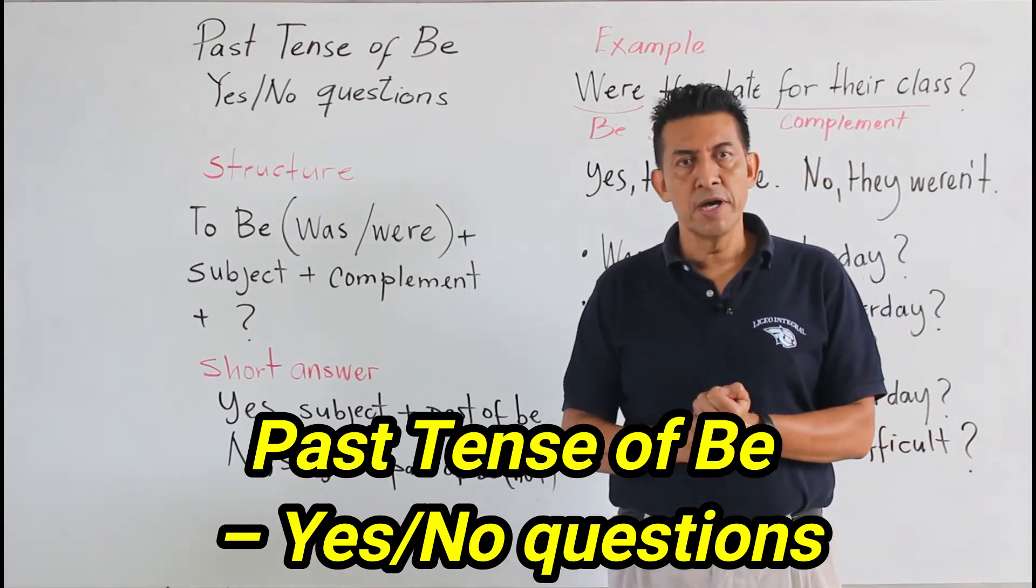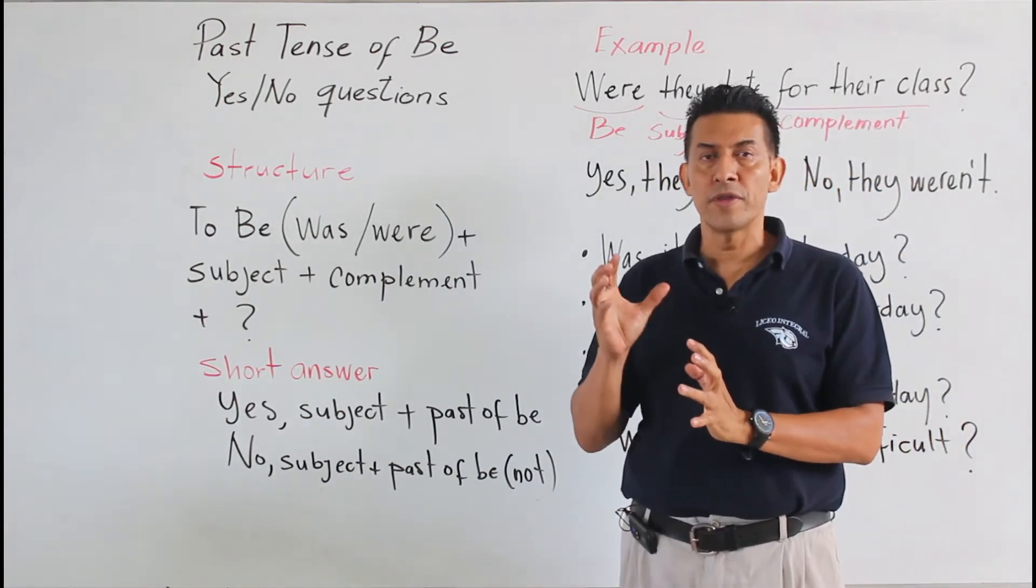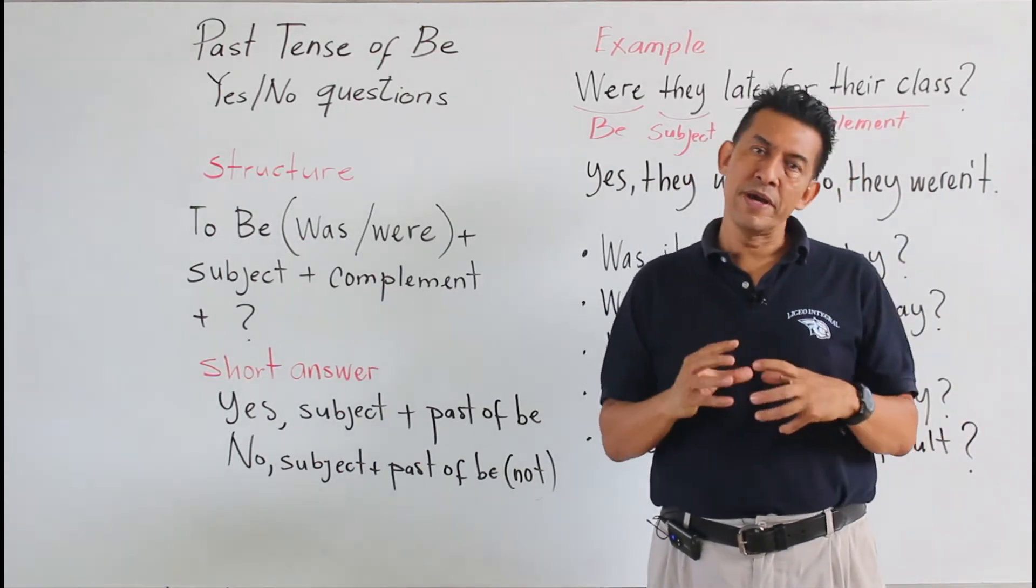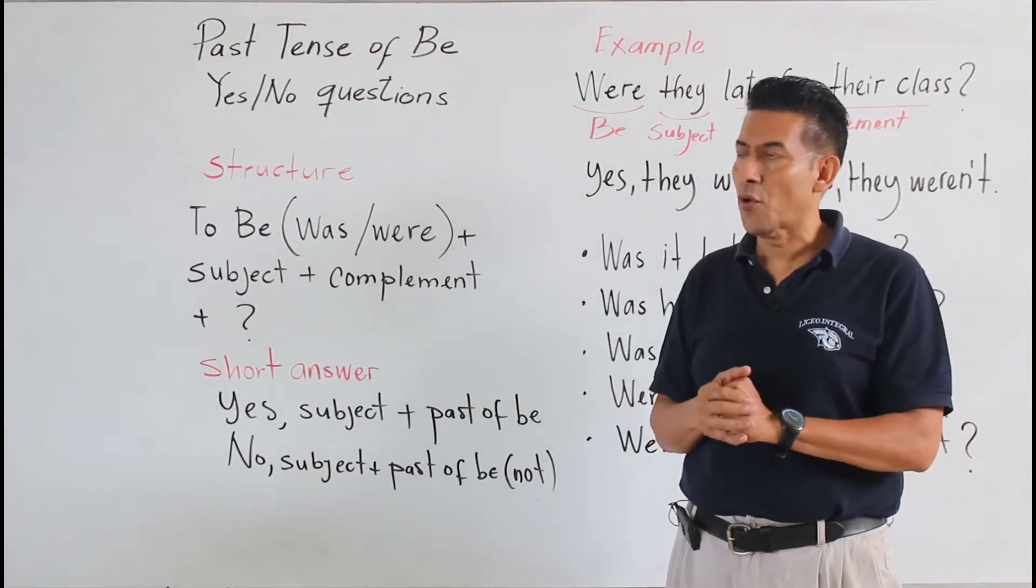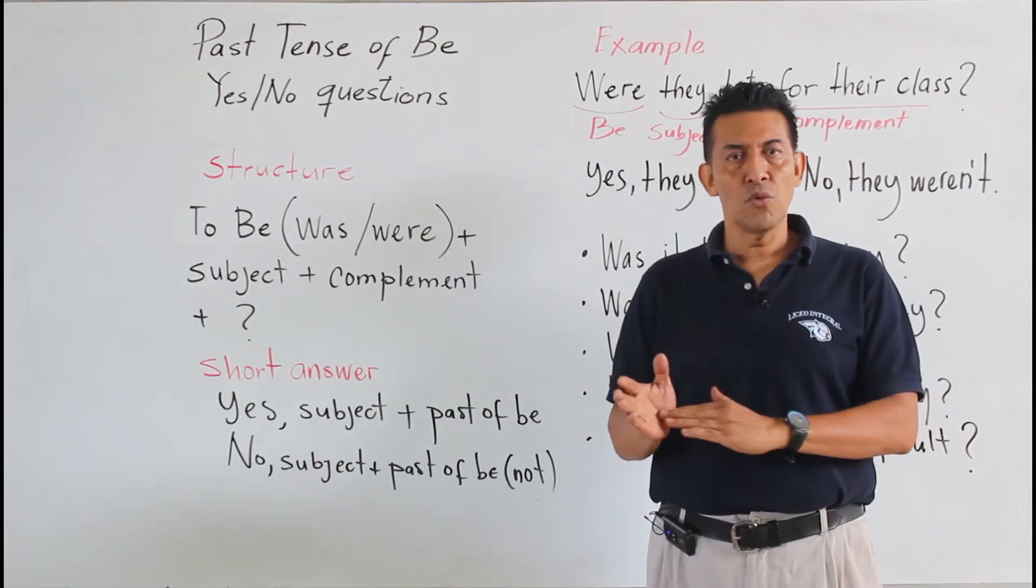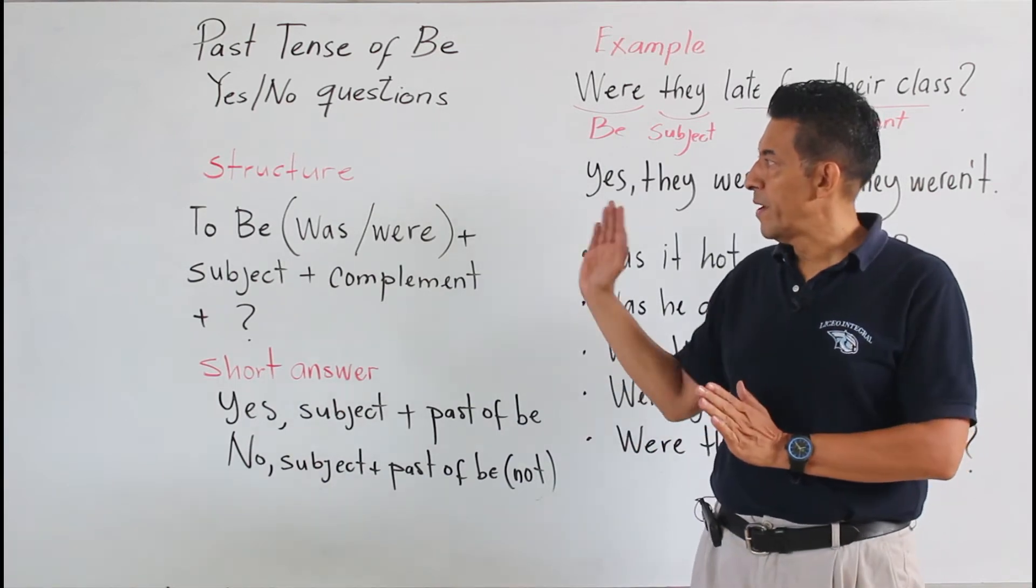Bienvenidos nuevamente a una clase de inglés. Seguimos con el estudio del pasado del verbo to be y vamos a aprender a construir oraciones con yes/no questions. Se le llama yes/no questions porque solamente puede responder yes o no. Veamos la estructura.